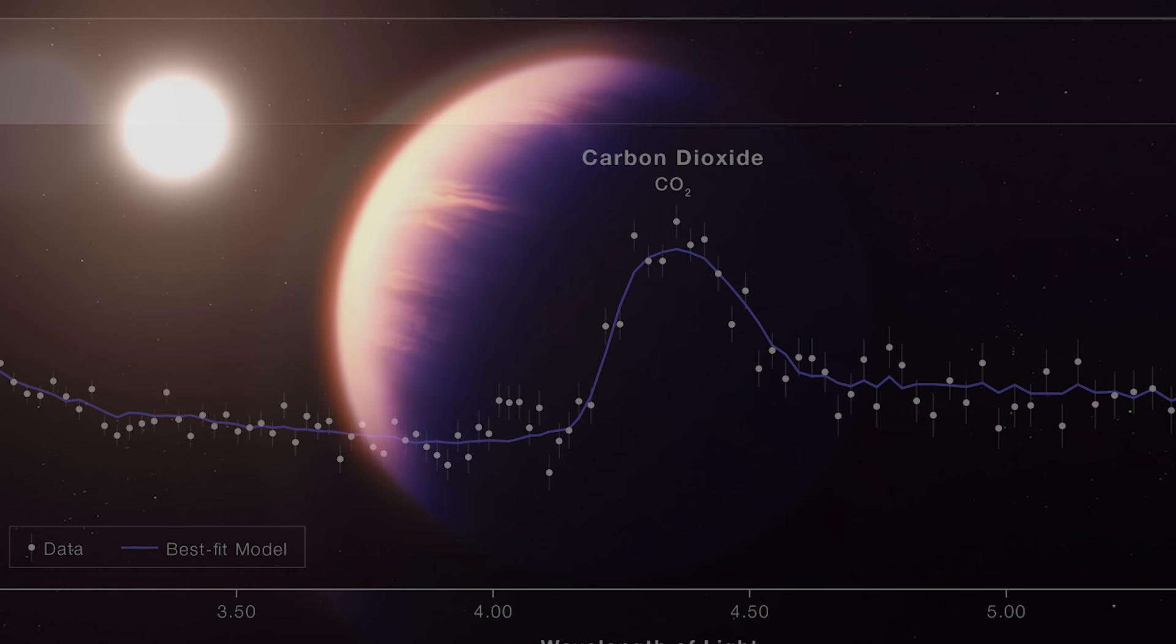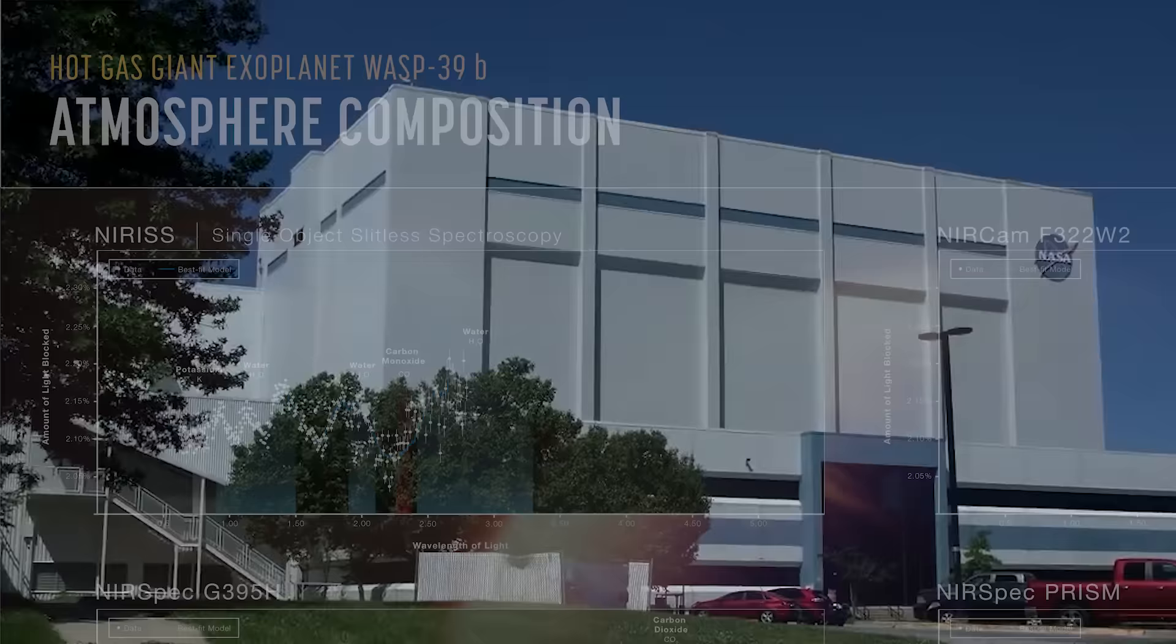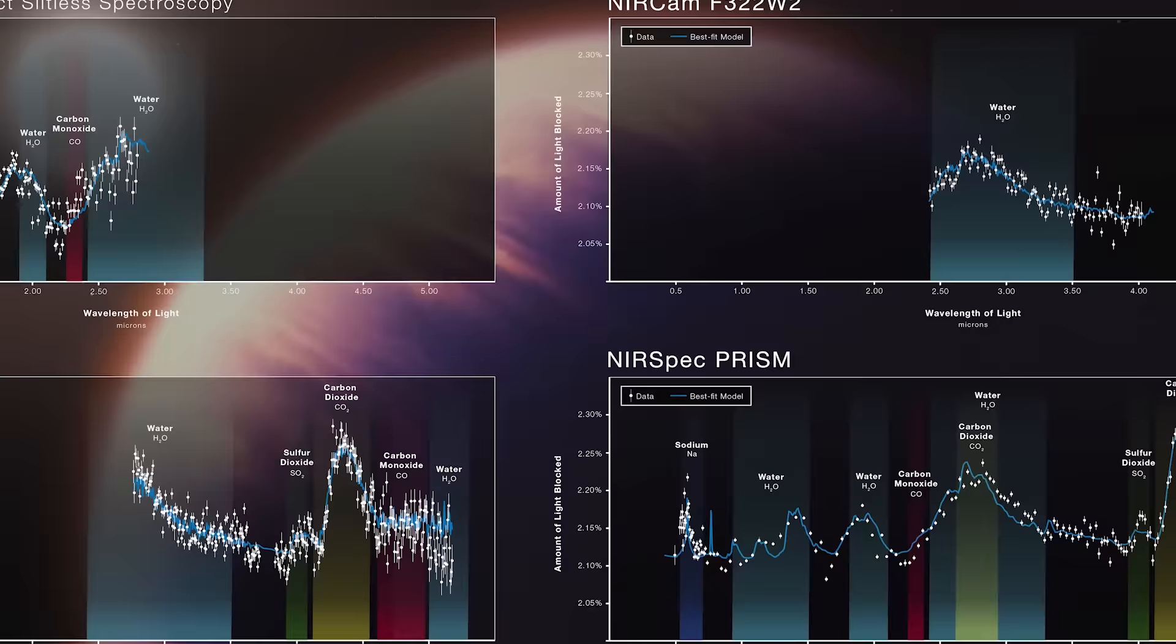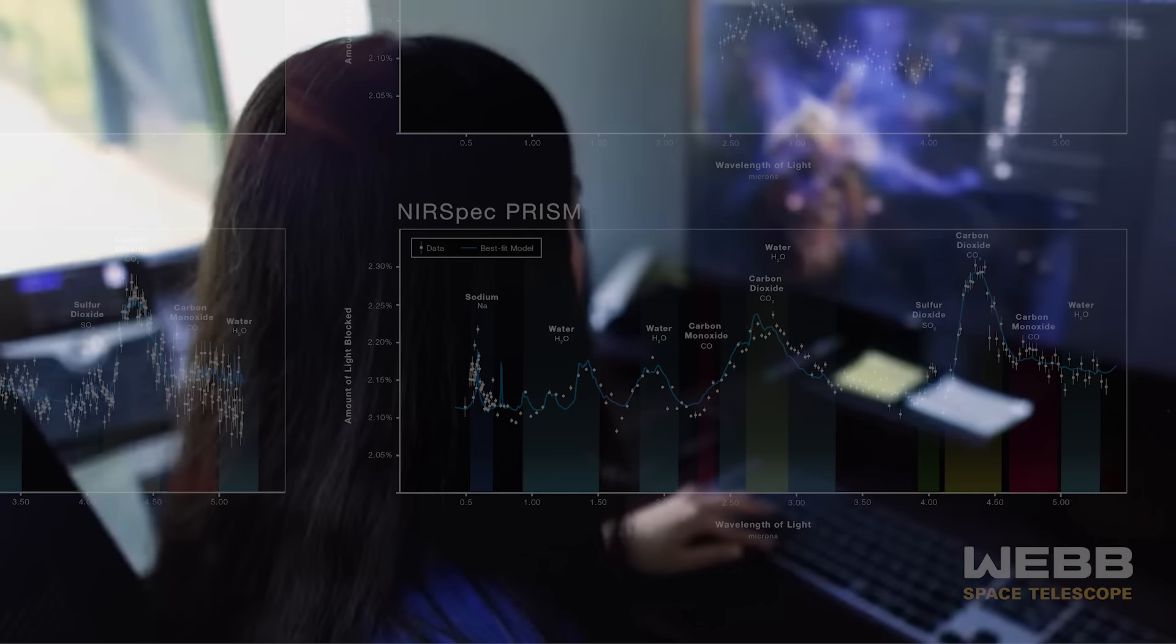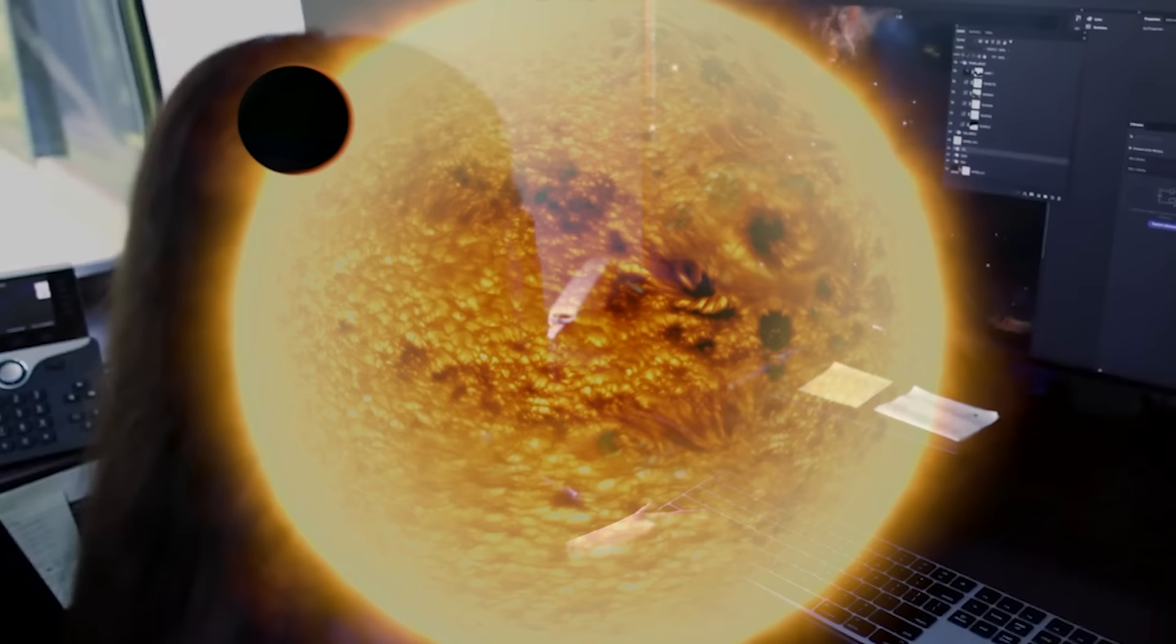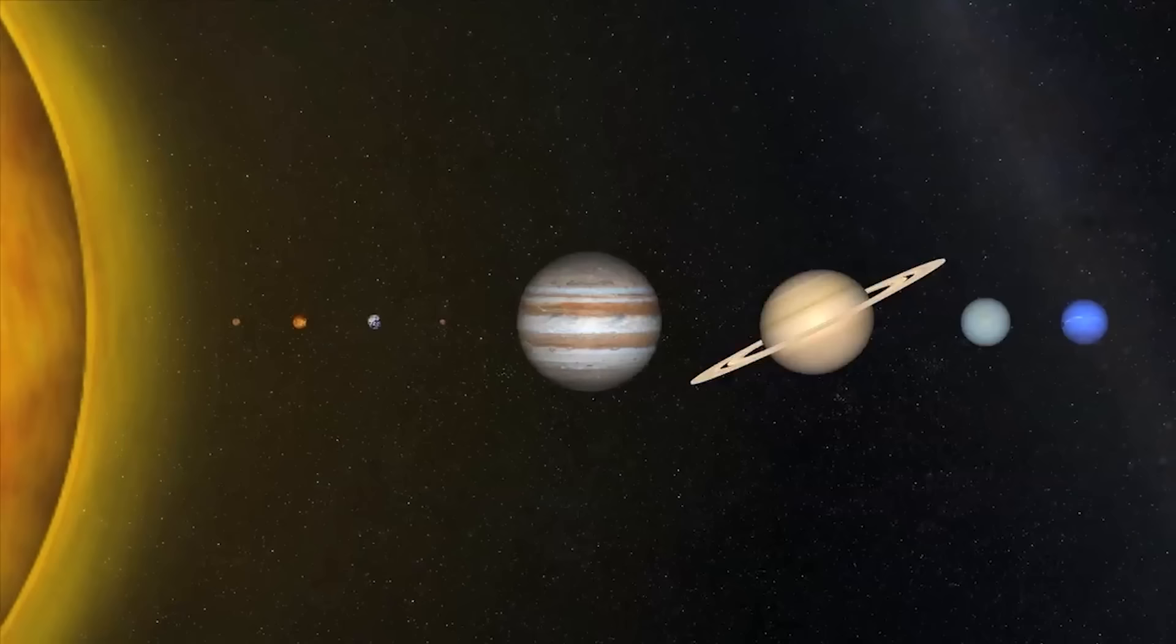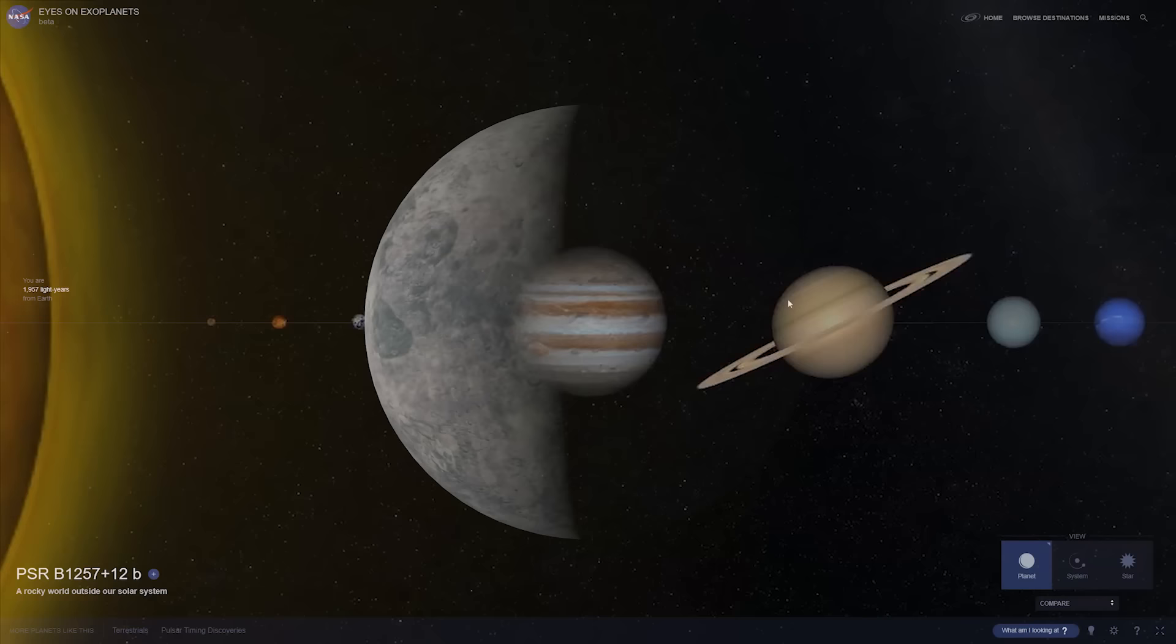But WASP-39b had more to offer. In November 2022, new readings from the James Webb Telescope provided an even more extensive list of what makes up the exoplanet's atmosphere, including atoms, molecules, active chemistry and clouds. This type of data will go a long way to help scientists unlock the bigger picture of what makes up an exoplanet's atmosphere, and would open the door to a whole new phase of exoplanet exploration. By the way, an exoplanet is just a planet that's outside our solar system, the first of which was only observed in 1992.